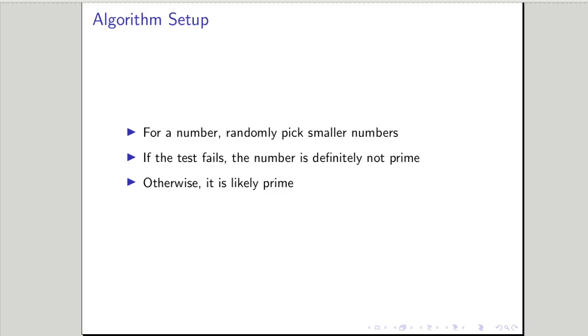So what does this look like? How are we going to use this algorithmically? Given a number, we're just going to randomly pick a bunch of numbers smaller than it, but greater than zero. If any of those tests fail, so for all those smaller numbers we pick, if any of them fail, we know the candidate number is not prime. But if it survives all those tests, we'll likely believe the number is prime.